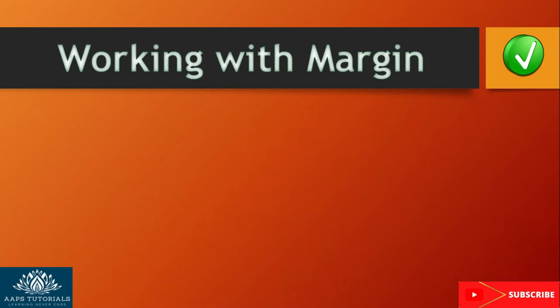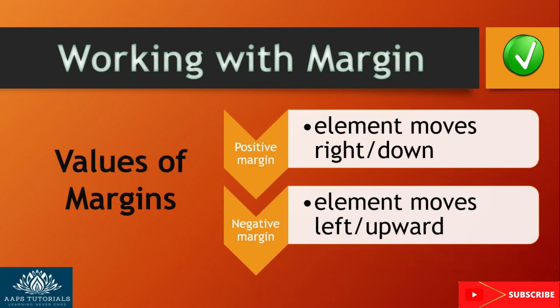Margin value: while working with margin bottom to set the margin area on the bottom of an element, we can give two values. Setting a positive value places the margin bottom farther from its neighboring elements, that is towards the right or down. Setting a negative value places the margin bottom area closer to its neighboring elements, that is left and up.